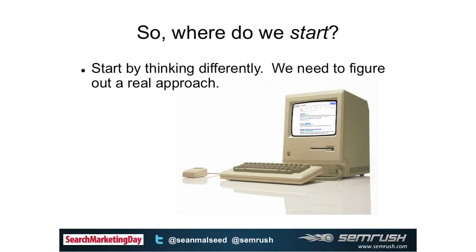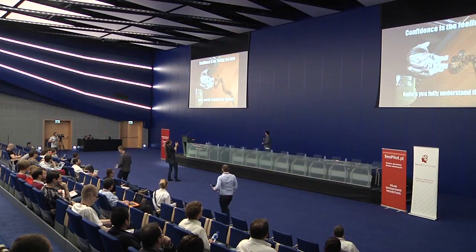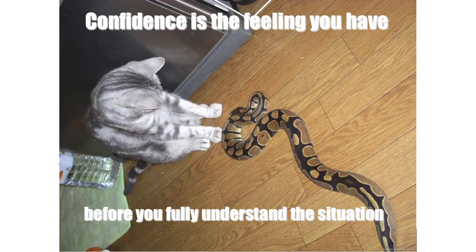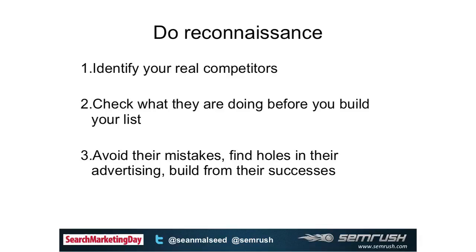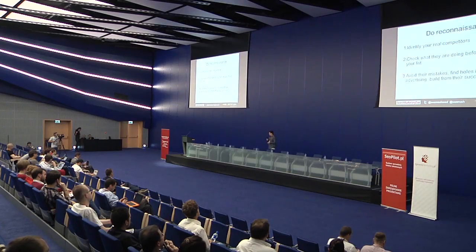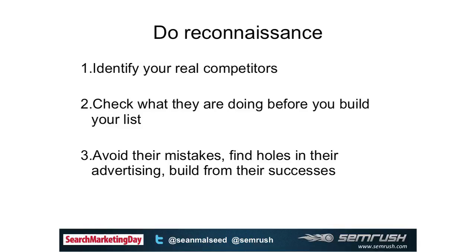We have to start by thinking differently - outside of the box a little bit. Basically what we're going to do is get some confidence. There are a couple of things we want to do to eliminate the trial and error. The biggest point - point number one up there - is identify our competition. A lot of people don't really do that. You might have some idea who your competition is, maybe you're in the industry or your client is in the industry, but you might not have a full picture of who else is advertising. Once we understand that, we check what they're doing, and then we can avoid their mistakes and learn from their success.